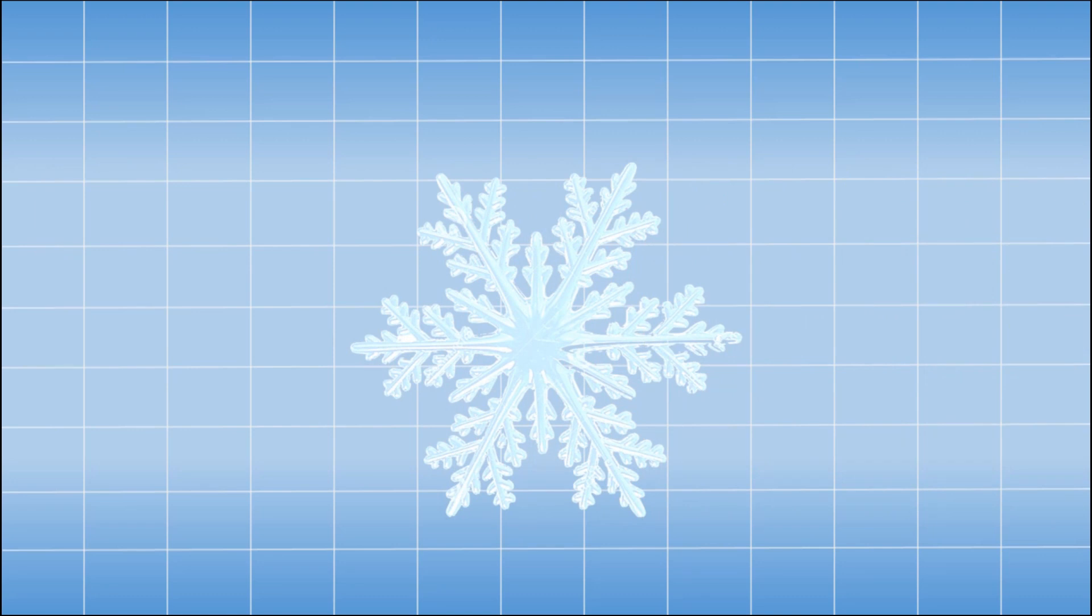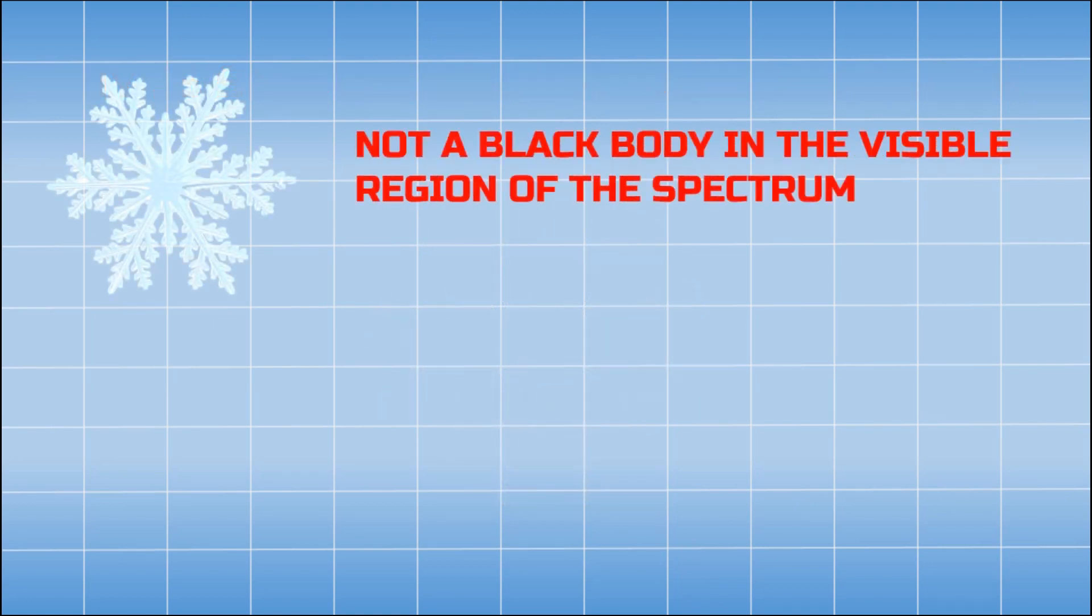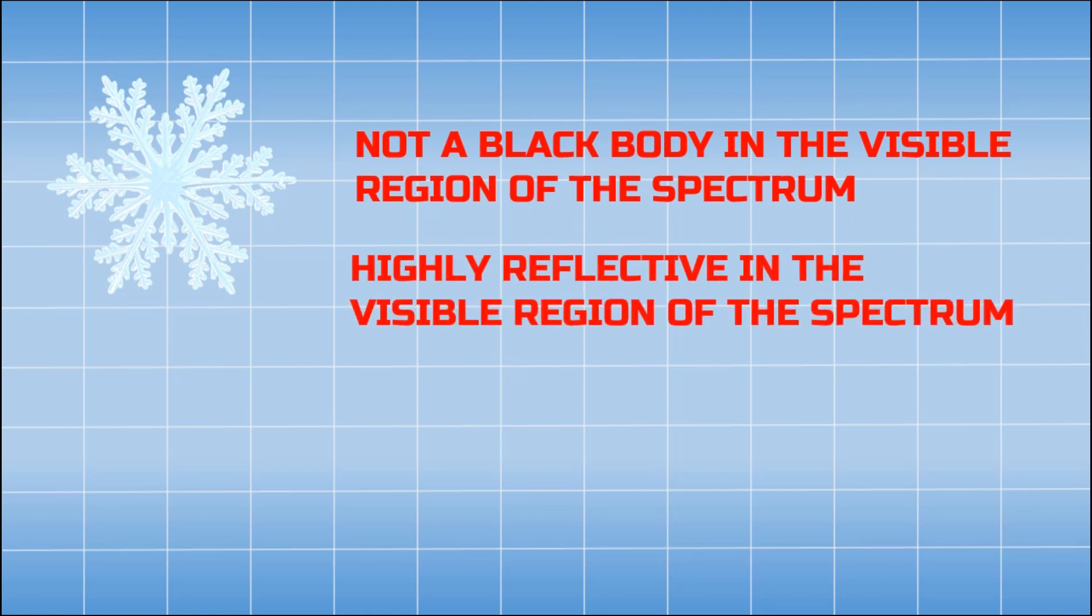Now let's go to the example of snow. Why is snow considered to be a black body? If you see, snow is actually not a black body in the visible region of the electromagnetic wave spectrum. It is highly reflective in visible part of the spectrum and that's why it looks white in color.